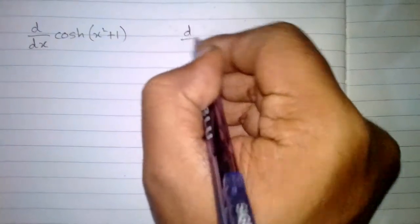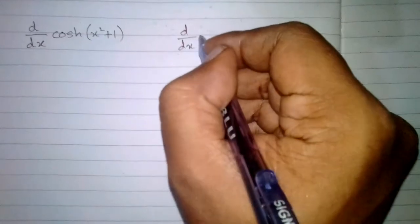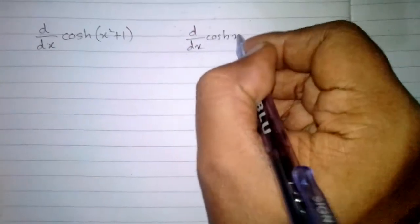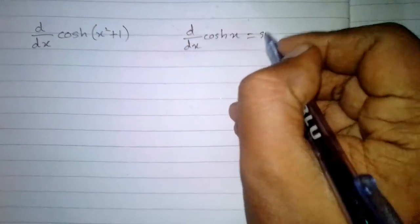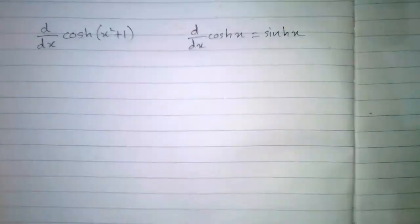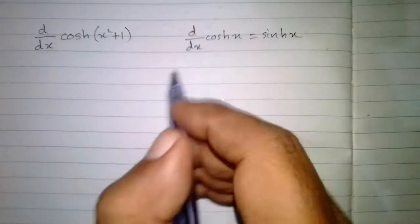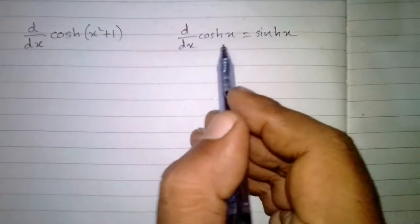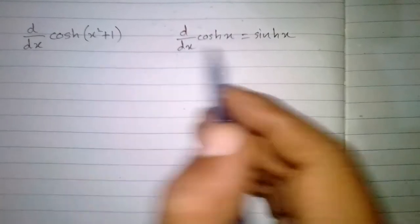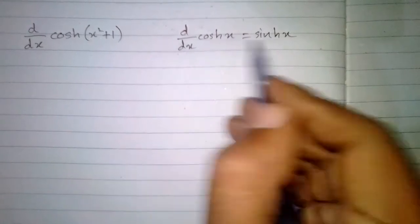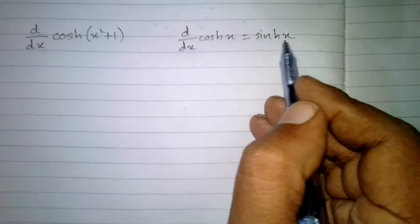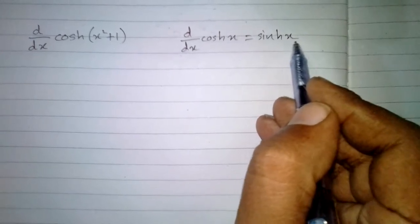In this video we will find the derivative of hyperbolic cos of (x² + 1). We know that the derivative of hyperbolic cos(x) is hyperbolic sin(x). Here we can see that we have x² + 1 in place of x, so we will put x² + 1 in place of x.